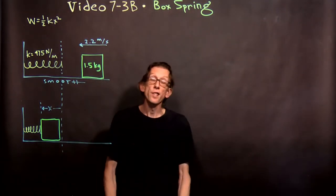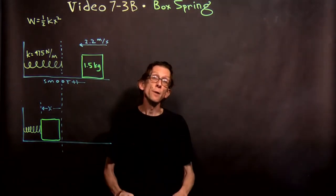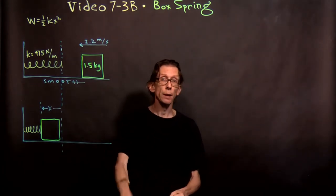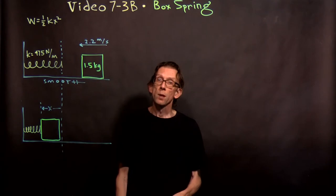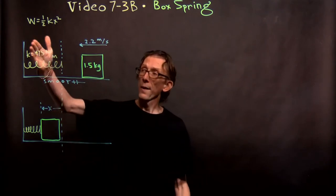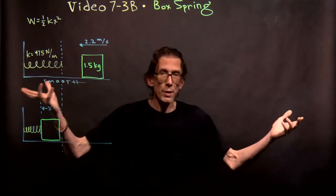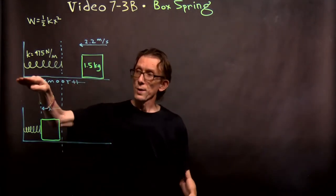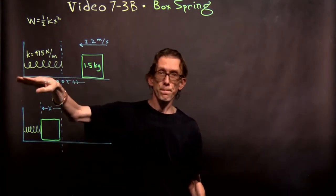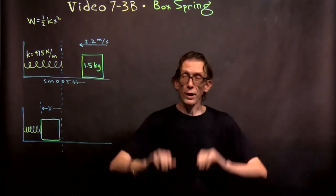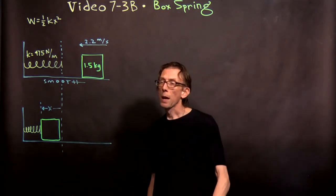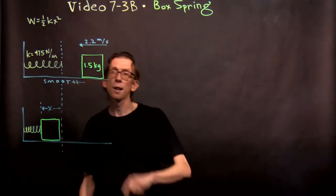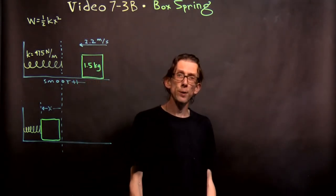So what we have here is another example of the use of the work-energy theorem, involving this time a spring. Here's the situation: we have a spring against the wall, and there's a smooth surface here, meaning no friction. We have a 1.5 kilogram block moving towards the spring at a speed of 2.2 meters per second.